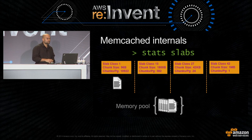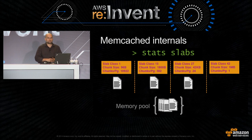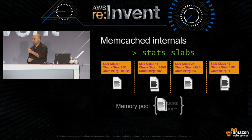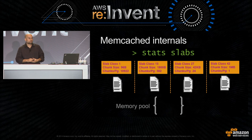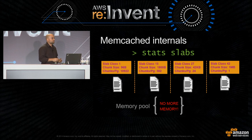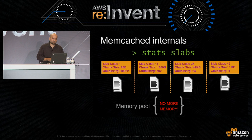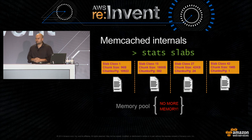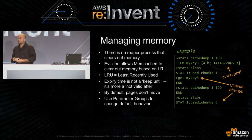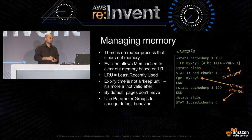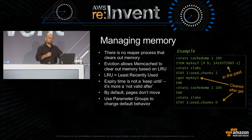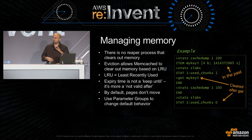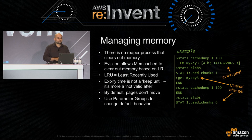The Memcached process will sit there and hand out one-megabyte pages to each slab as they need them. Eventually you get to the point where Memcached doesn't have any more memory. So it's very important to think about how you're managing memory and your Memcached cluster. There's no background reaper process in Memcached that actually goes and throws things away when they're no longer needed. Instead, there's something called eviction.